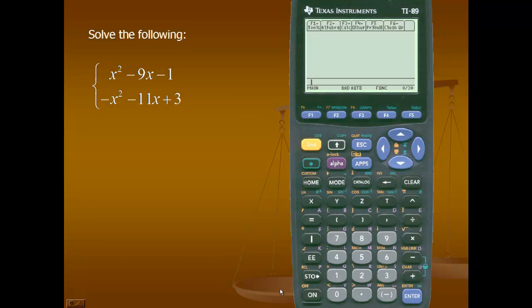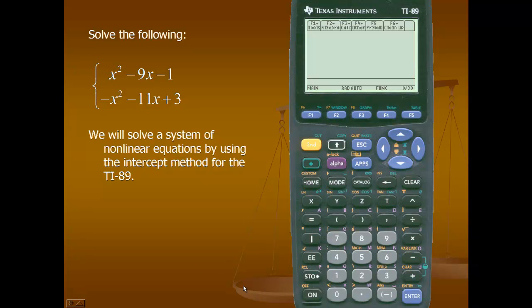Our first equation is x squared minus 9x minus 1, and our second equation is negative x squared minus 11x plus 3. We'll solve this system of nonlinear equations by using the intercept method on our calculator.